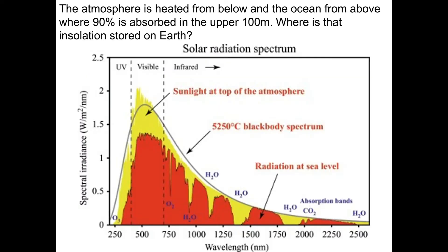What's driving this difference in circulation? The primary thing is that the atmosphere is heated from below, and the ocean is heated from above, with 90% of insolation absorbed in the upper 100 meters. The atmosphere is basically transparent to incoming insolation of relatively short wavelengths; that high-frequency insolation travels through the transparent atmosphere, strikes the Earth's surface, is absorbed with high efficiency, and then re-emitted at a longer wavelength — maxing out in the infrared range. The Earth's surface heats the atmosphere from below, while the ocean receives insolation from above, most of which is absorbed in the upper 100 meters.